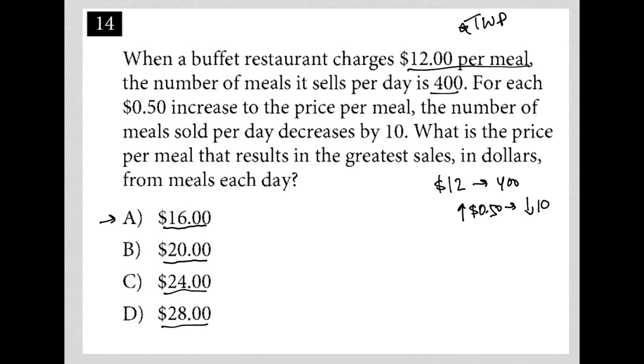So what I'm going to use is what I've been given. I know that as the cost of the meal goes up by 50 cents, the number of meals sold goes down by 10. So how much of a difference is my starting point, my $12 meal, to my choice A, my $16 meal? Well, that's an addition of $4. How many 50 cent increases is that? That will just be double that, because it takes two 50 cent increases to equal $1. So this is going to be eight increases.